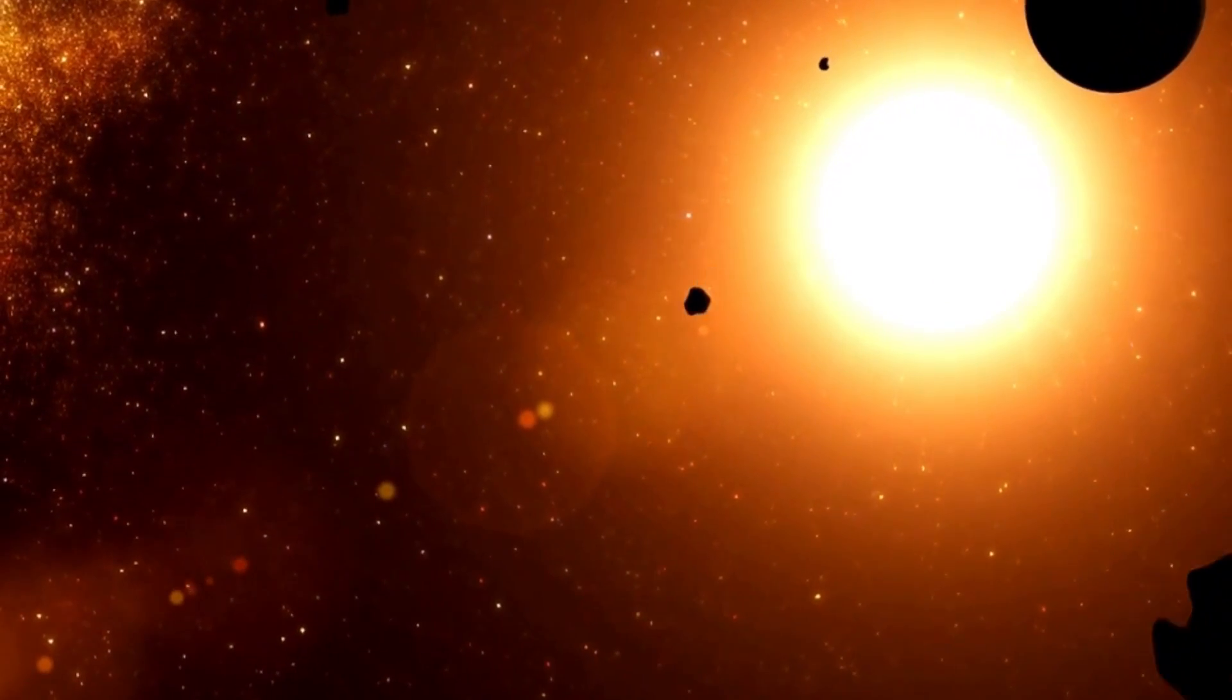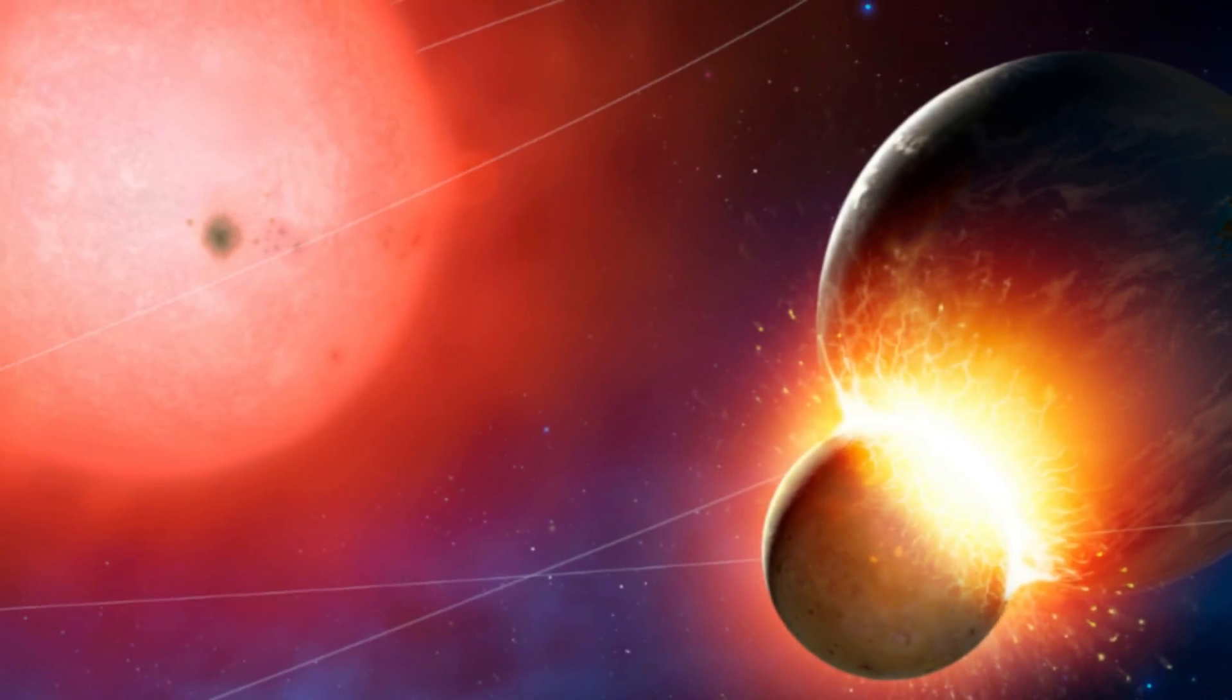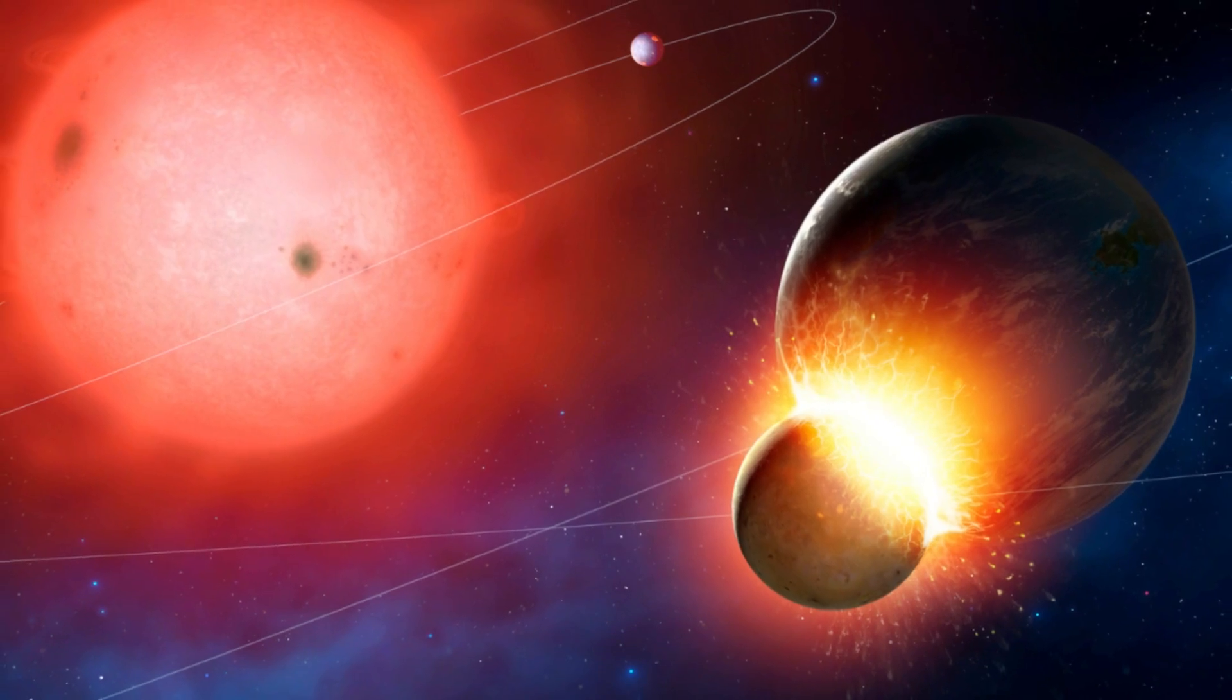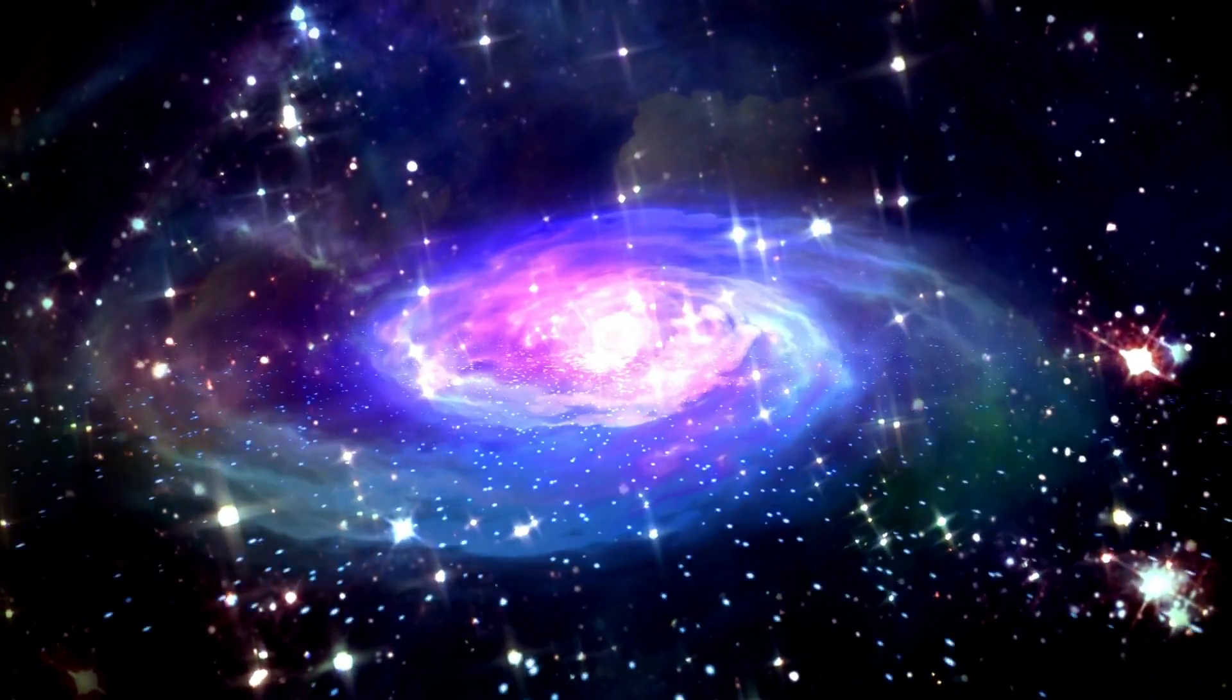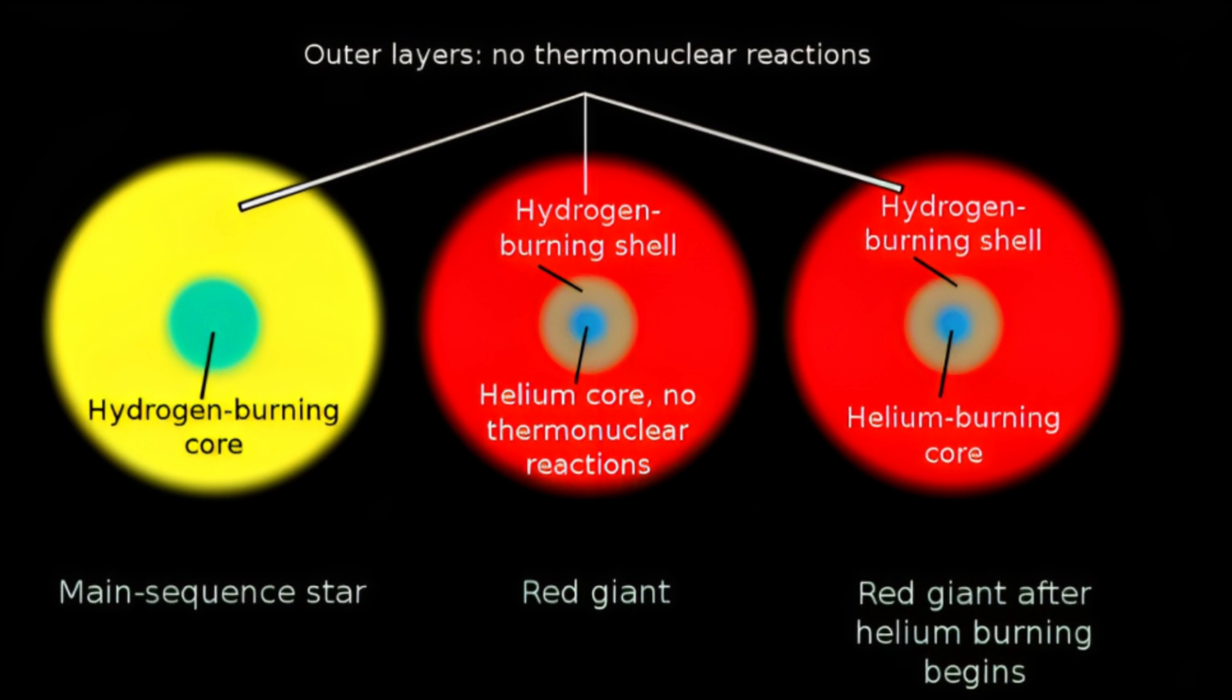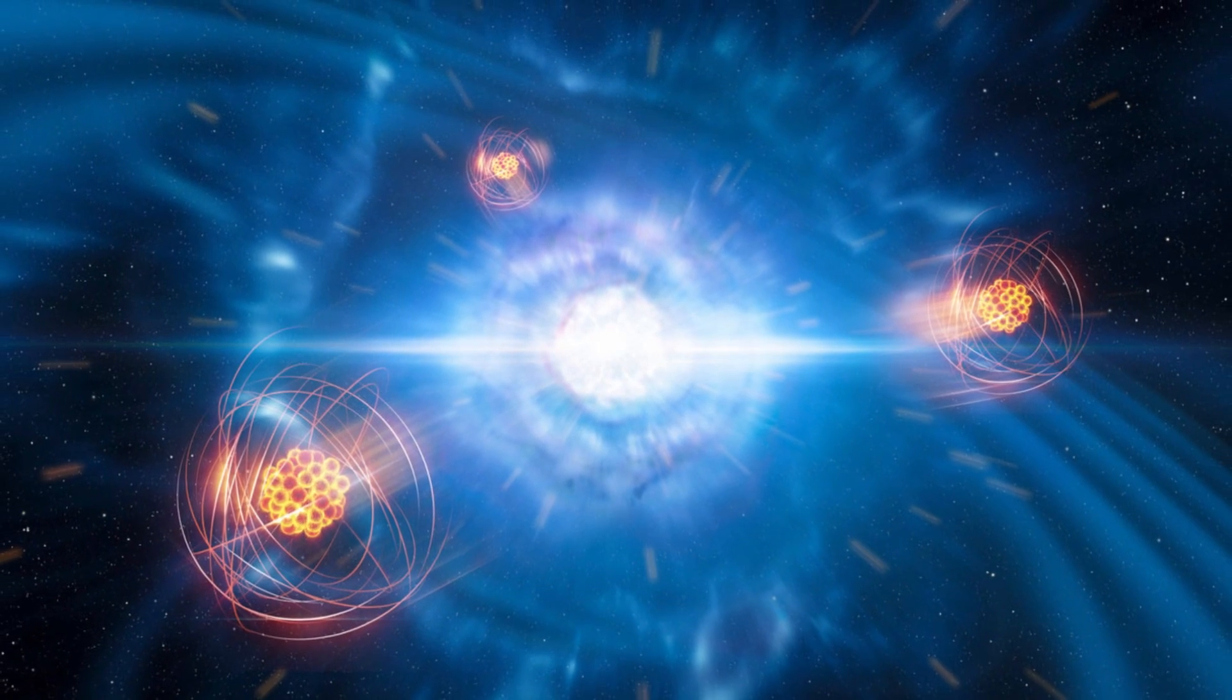Betelgeuse's stellar saga is one of cosmic intricacy. As a red giant, it conducts a symphony of fusion, melding elements like helium, carbon, oxygen, silicon, and iron. This celestial alchemy occurs under immense pressure within its core, where helium transforms into carbon in a slow dance spanning thousands of years. This rhythm continues, birthing heavier elements until iron emerges, signaling the star's inexorable fate.